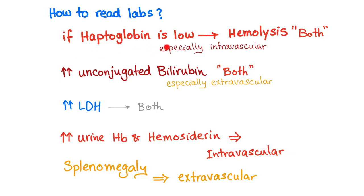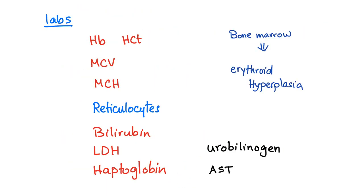How to read labs: if haptoglobin is low, there is hemolysis. Haptoglobin is especially very low in intravascular hemolysis; extravascular may not be as obvious. Increased unconjugated bilirubin — both, especially extravascular. Increased LDH — both. Hemoglobinuria and hemosiderinuria are uniquely intravascular: hemoglobin escapes into the blood to the kidney and gets excreted, and the iron in the hemoglobin forms hemosiderin — uniquely intravascular. Splenomegaly — both, especially extravascular.